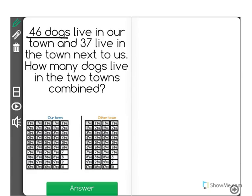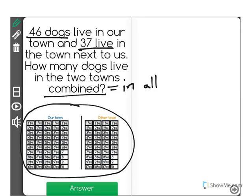46 dogs live in our town and 37 live in the town next to us. How many dogs live in the two towns combined? Now combined is a word that means in all or all together. So the way that we find that out is by adding these two together.